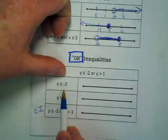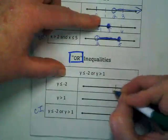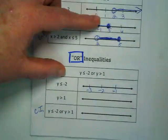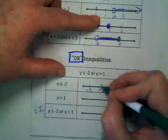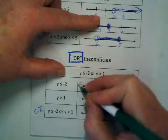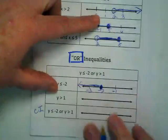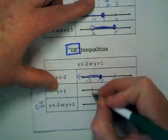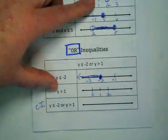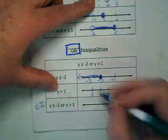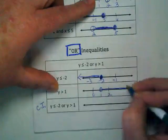The first one, y is less than or equal to negative 2. Negative 1, negative 2, negative 3. It's less than or equal to, so do I fill it in or leave it open? Fill it in. And the line is going to go to the left. Second, y is greater than 1. So I'm just going to put 0, 1, 2. It's only greater than, not greater than or equal to, so open circle. And line to the right.